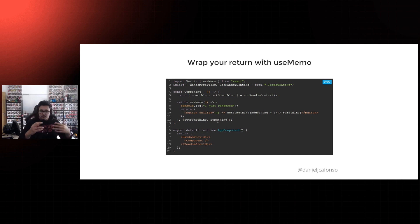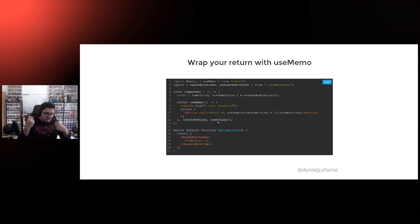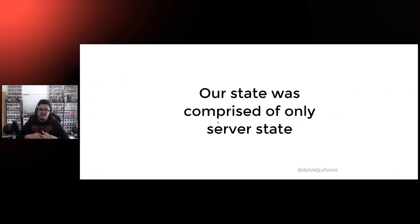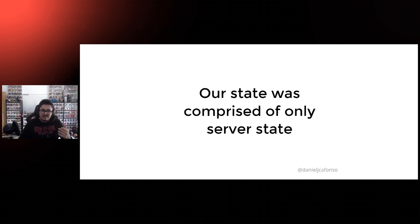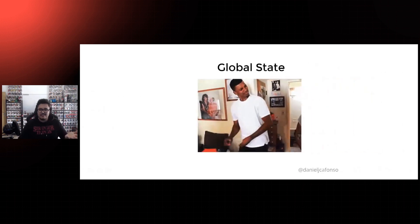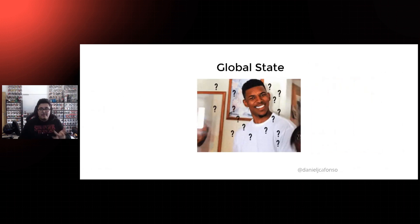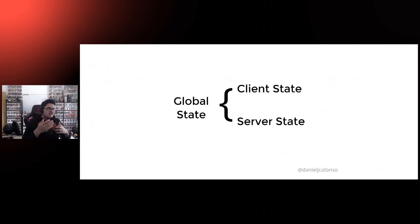So you might be wondering: okay, you fixed Context, you know how to deal with these issues — but did you continue using Context? Well, we didn't. And why? It's because our state was comprised only of server state. Usually when you're dealing with your application you have global state, which is the joint force of client state and server state. The client state is the state owned by your application — it's temporary, local, and generally non-persistent between sessions, and you can access it with synchronous APIs.